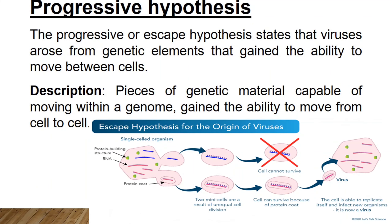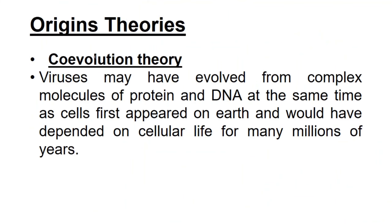The progressive or escape hypothesis states that viruses arose from genetic elements that gained the ability to move between cells. Pieces of genetic material capable of moving within a genome gained the ability to move from cell to cell.